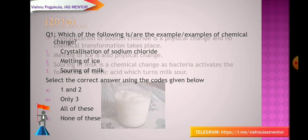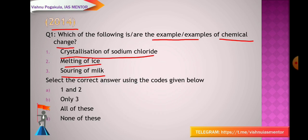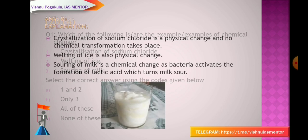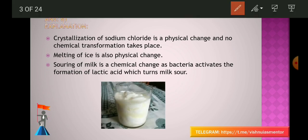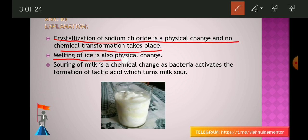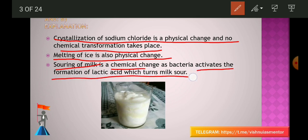The answer is B, that is only 3 — only souring of milk is an example of chemical change; the other two are physical changes. Crystallization of sodium chloride is a physical change and no chemical transformation takes place. Melting of ice is also a physical change where it changes its physical appearance to liquid. Souring of milk is a chemical change as bacteria activates the formation of lactic acid which turns milk sour.